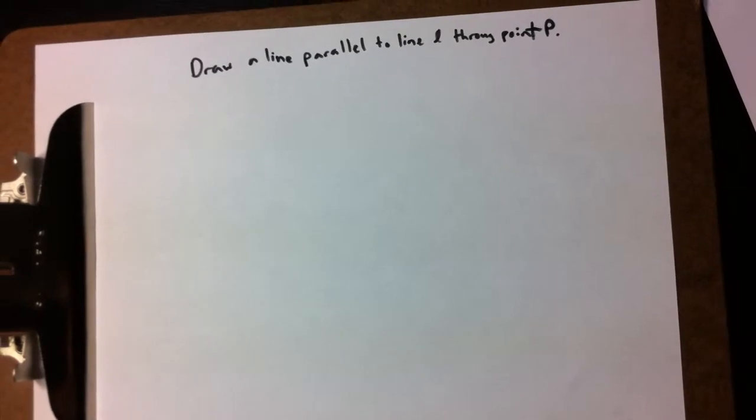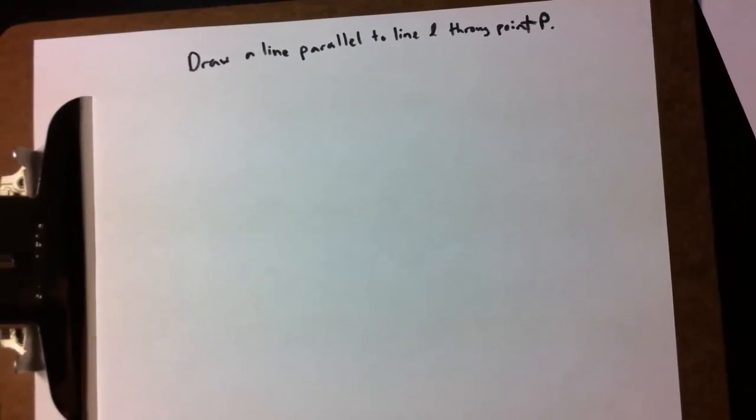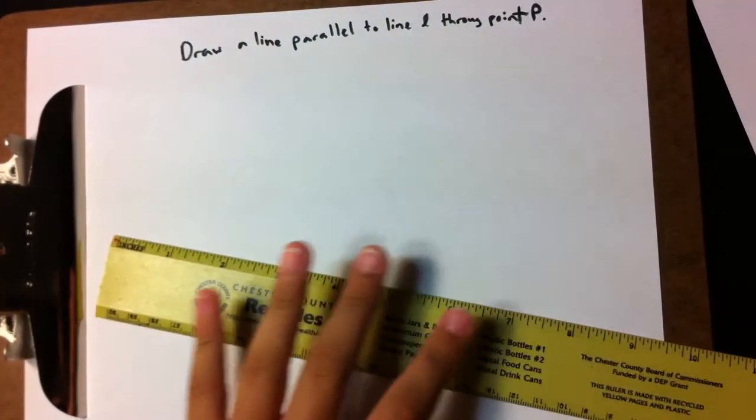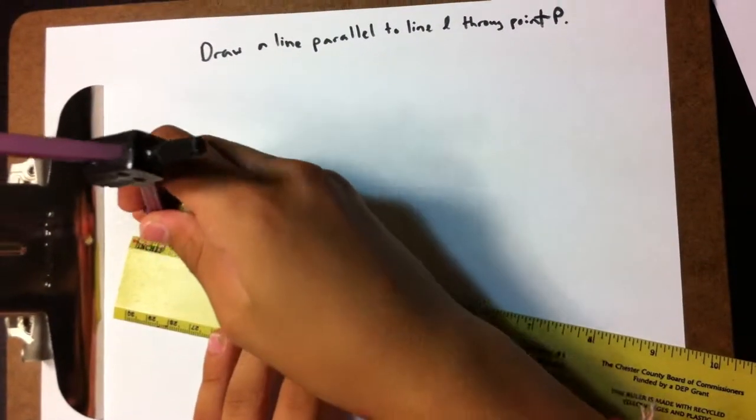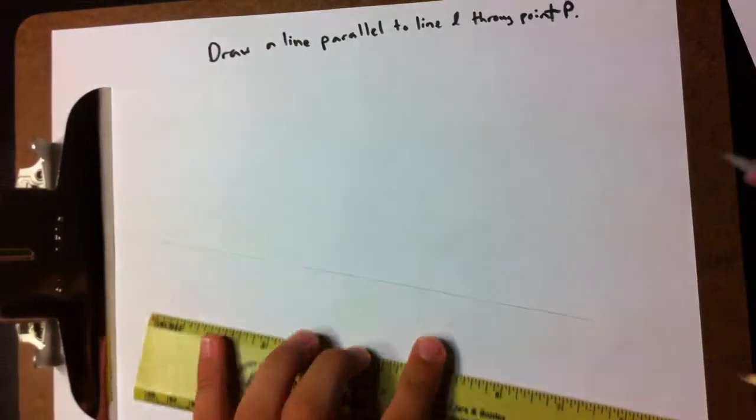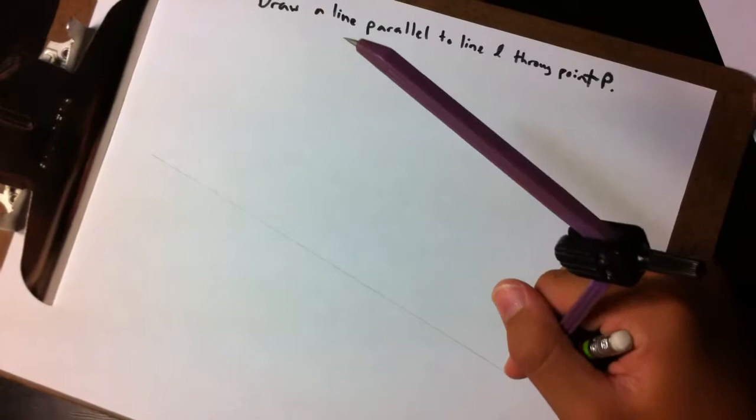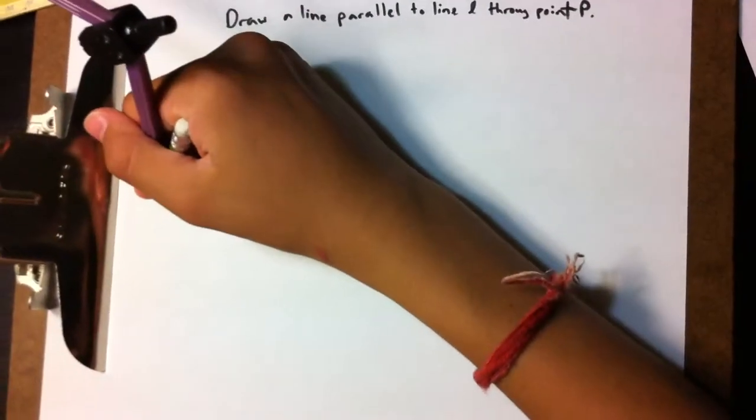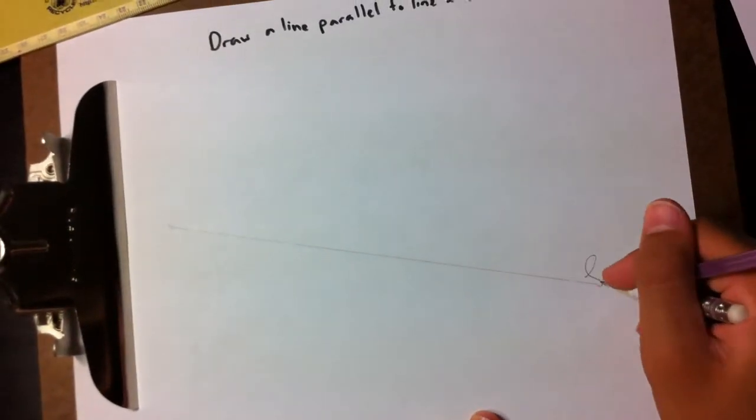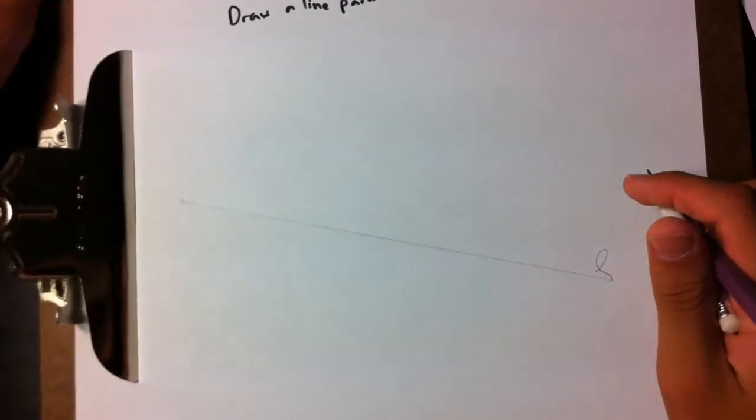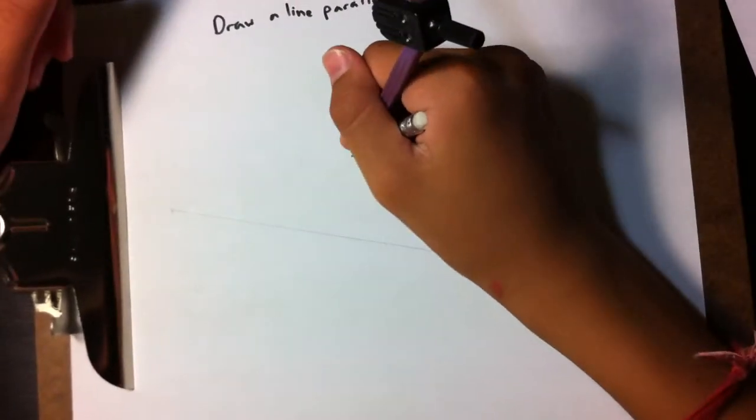And so you draw your line, just for the fun of it, I'm going to make it slanty, because slanty is fun. So you have your line L, and then you're given random point P again.